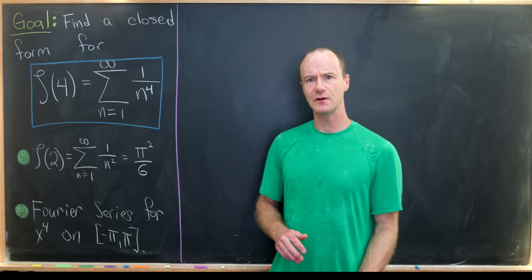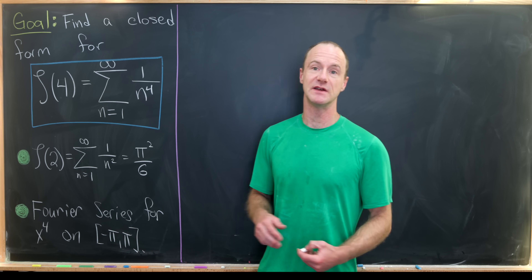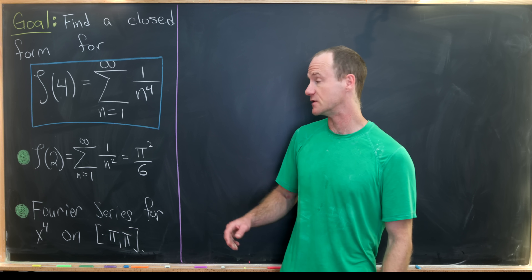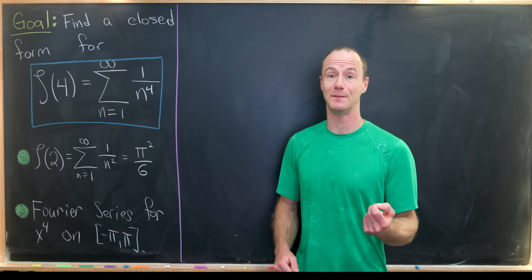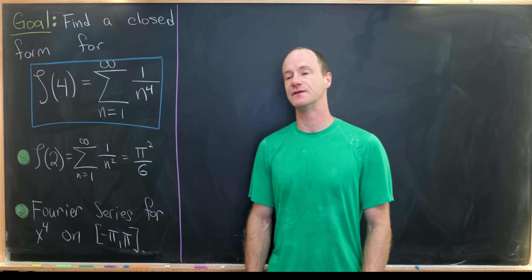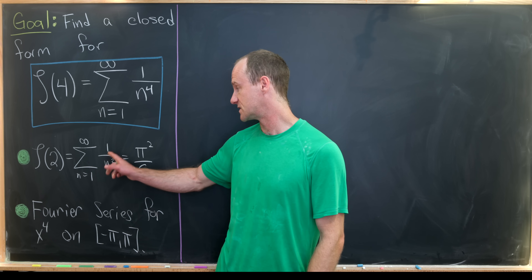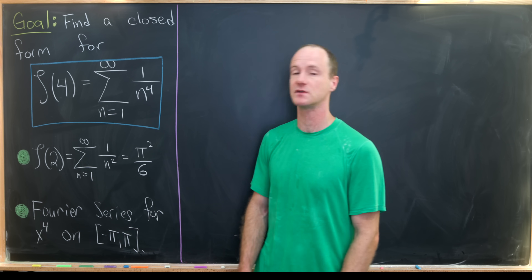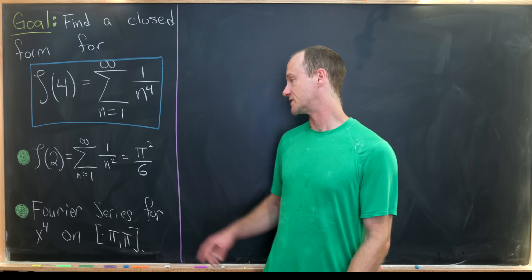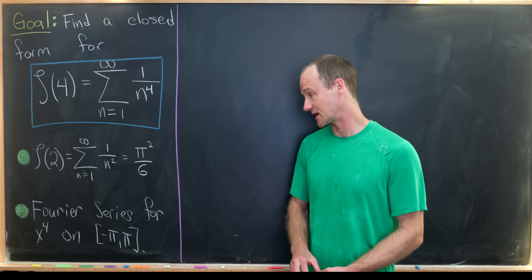The fact we need to recall — which is very famous and we've covered in previous videos — is the so-called Basel problem: the Riemann zeta function evaluated at 2, or the sum of the reciprocals of the squares, is equal to π² over 6.